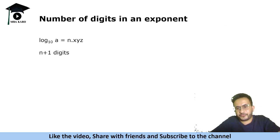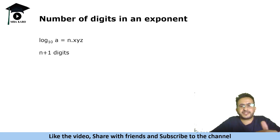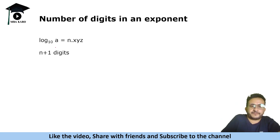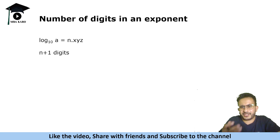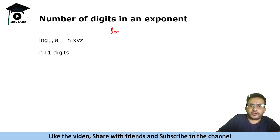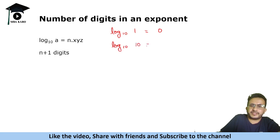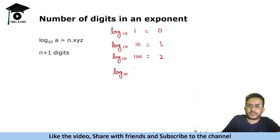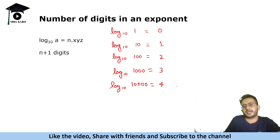Now let us look at another type of question asked in logarithms: finding the number of digits in an exponent. You will be given a log value and an exponent, and you have to tell the number of digits. The rule is: if log base 10 of a equals some value n.something, then a has n+1 digits. For example: log 1 = 0 (1 digit), log 10 = 1 (2 digits), log 100 = 2 (3 digits), log 1000 = 3 (4 digits).